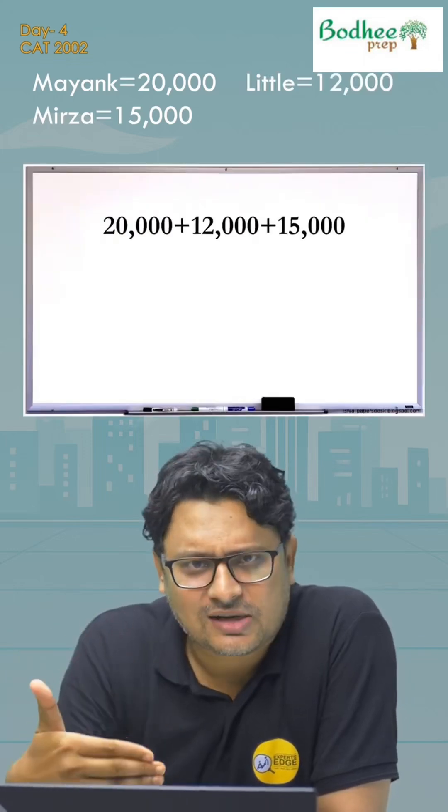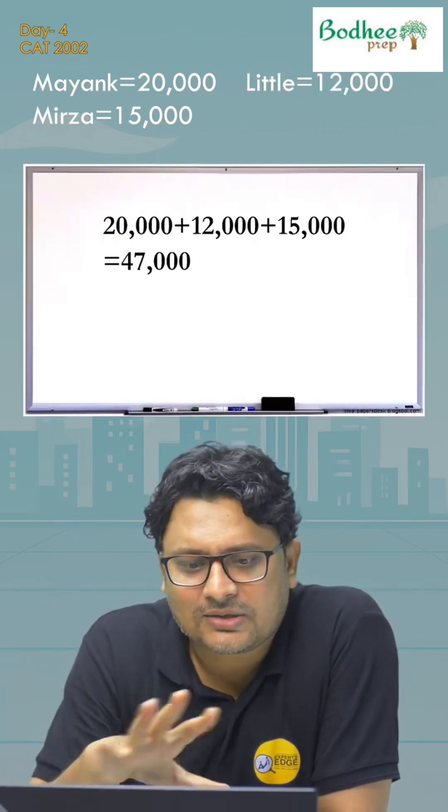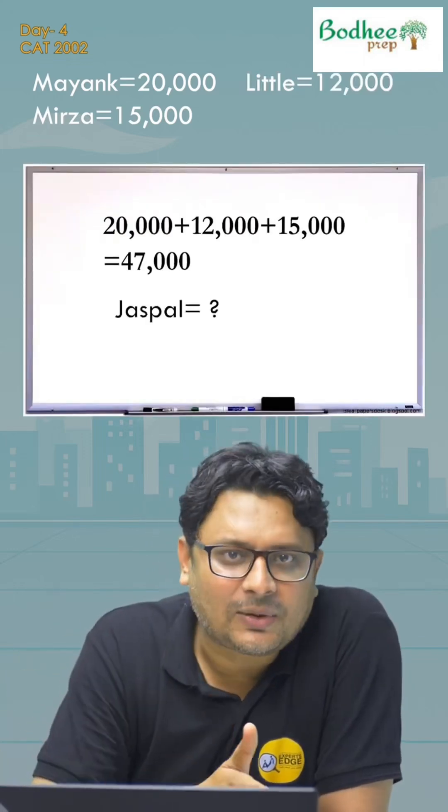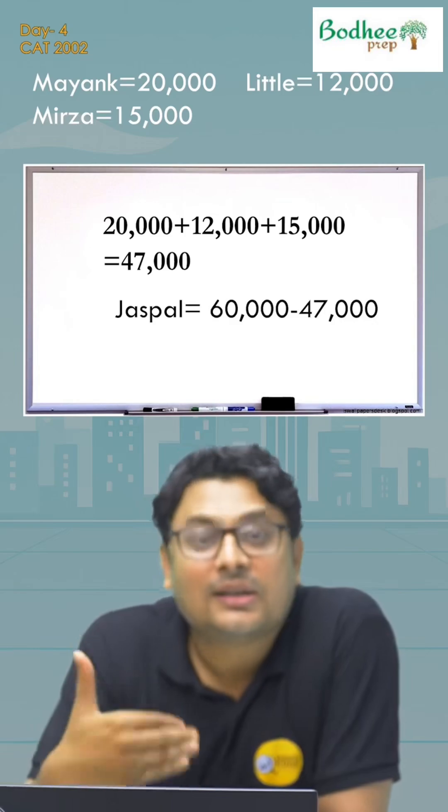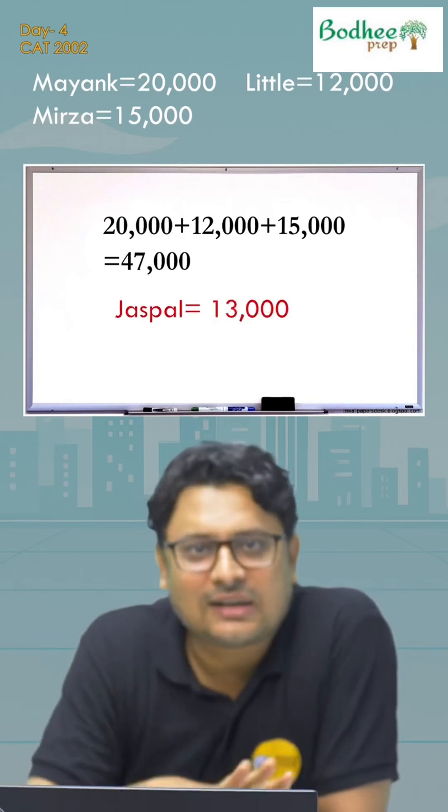Sum it up: 20,000 + 15,000 + 12,000 = 47,000. The remainder goes to Jaspal. That is 60,000 minus 47,000 = 13,000.